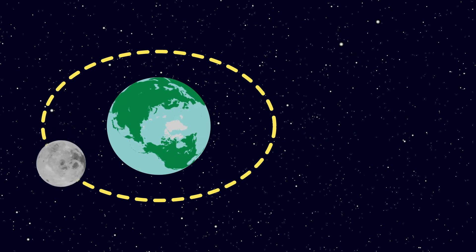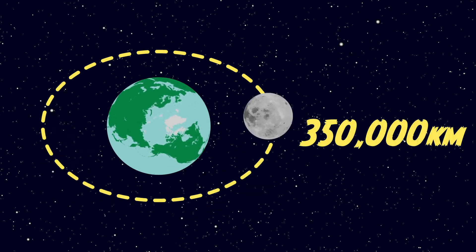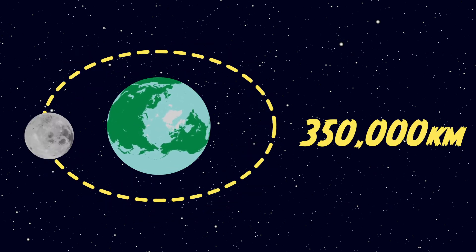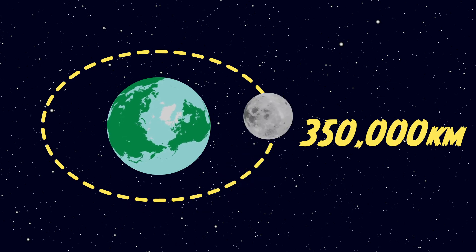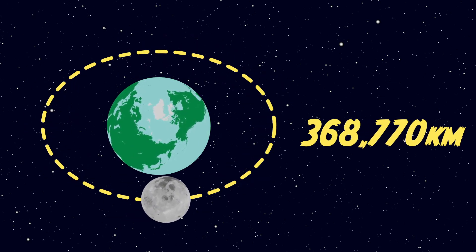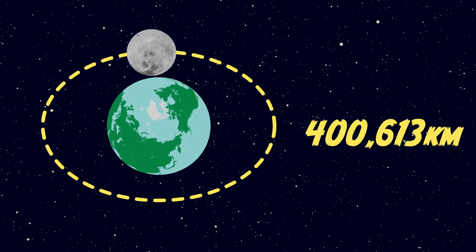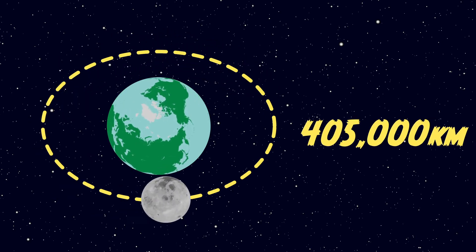The distance between the moon and the earth actually changes quite a bit. At its closest point, the perigee, the moon is about 350,000 kilometers from the earth, while at the apogee, its farthest point, it's about 405,000 kilometers away.